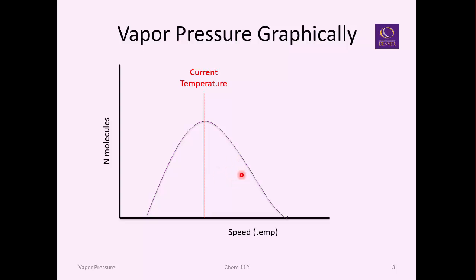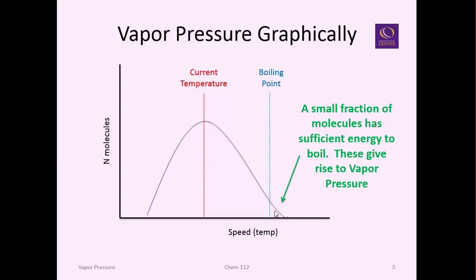Now if I was to put the boiling point of this material on this graph as well, you could see that statistically some of those molecules are actually above the boiling point. Those molecules, that small fraction, they're actually able to leave the solution, and not every solution is going to have this kind of curve.